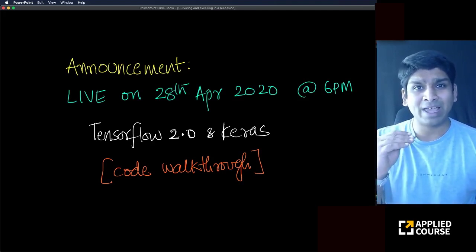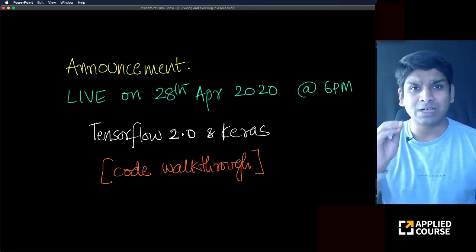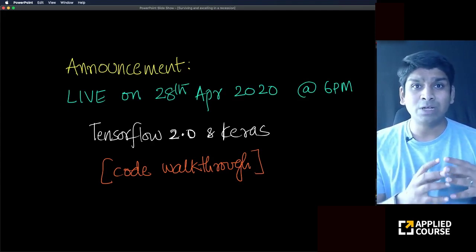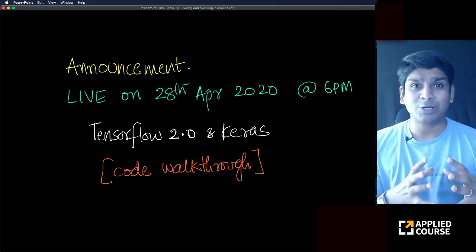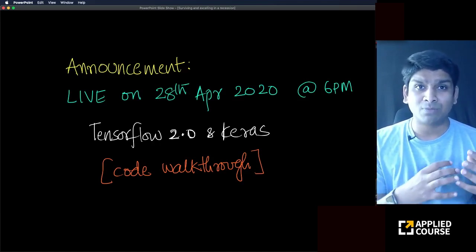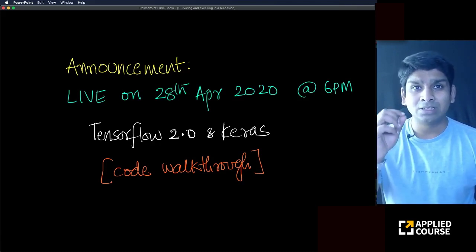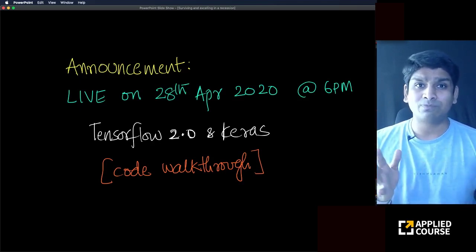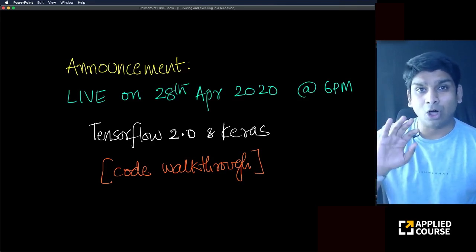We'll have a series of live sessions where we do line-by-line code walkthroughs for deep learning code, covering a wide spectrum of models. We'll start with simple multi-layered perceptrons, then build convolutional neural networks, and also more complex models like ResNets. We'll also train simple LSTMs as well as complex sequence-to-sequence models, attention models, Transformers, BERT, and GANs.